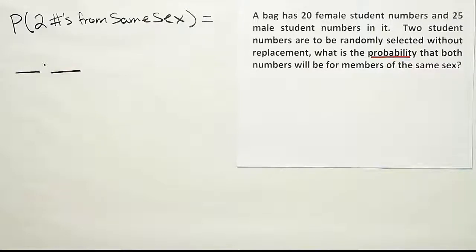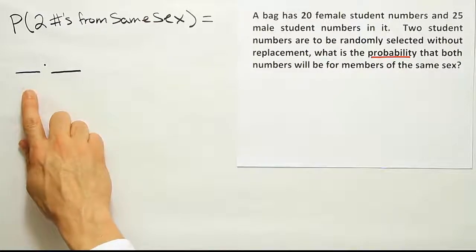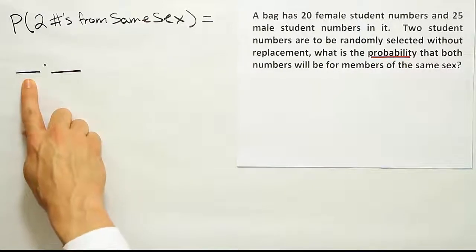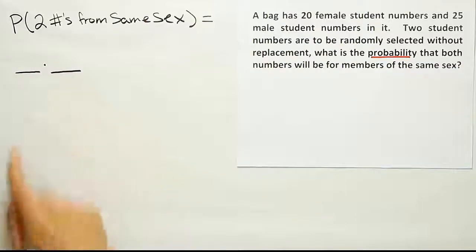So if you're a little more sophisticated, you might say, well, you know, in fact, it doesn't matter what this first number is. It really doesn't matter. You might say, well, it could be whatever it wants to be, male or female. What matters is that the second one matches the first one. Well, see, that right away is a problem in probability. You don't want to have an ambiguous first option here.